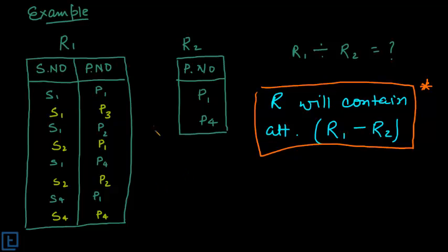Now let's divide it. What we know from the definition is we have to find out all the S1 which corresponds to all the phone numbers in R2. So let's say we have P1 and P4. We will see P1 first of all, and P1 corresponds to this S1.